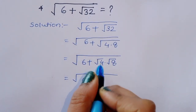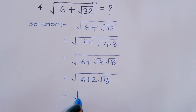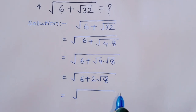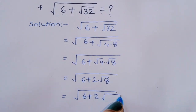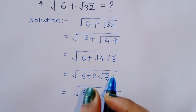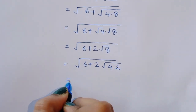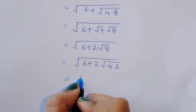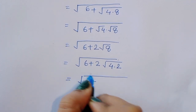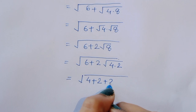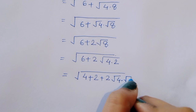So we get square root of 6 plus 2 times square root of 8. Now square root of 8 can be written as square root of 4 times 2. Also, 6 can be written as 4 plus 2, giving us 4 plus 2 plus 2 times square root of 4 times square root of 2.